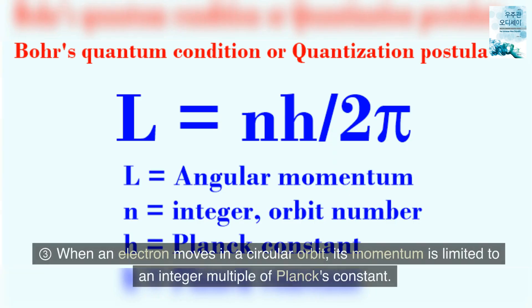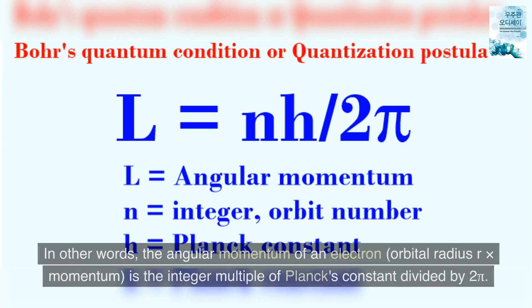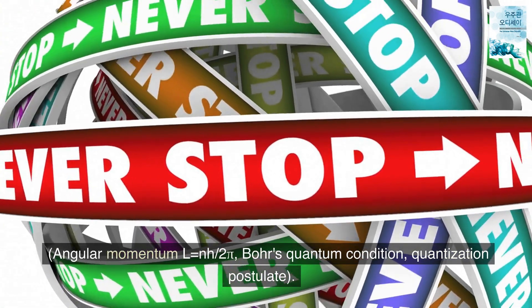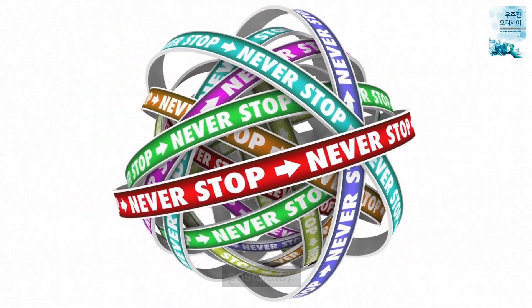Three: When an electron moves in a circular orbit, its momentum is limited to an integer multiple of Planck's constant. In other words, the angular momentum of an electron, orbital radius R times momentum, is the integer multiple of Planck's constant divided by 2π. Angular momentum L = nH/2π, Bohr's quantum condition, quantization postulate.